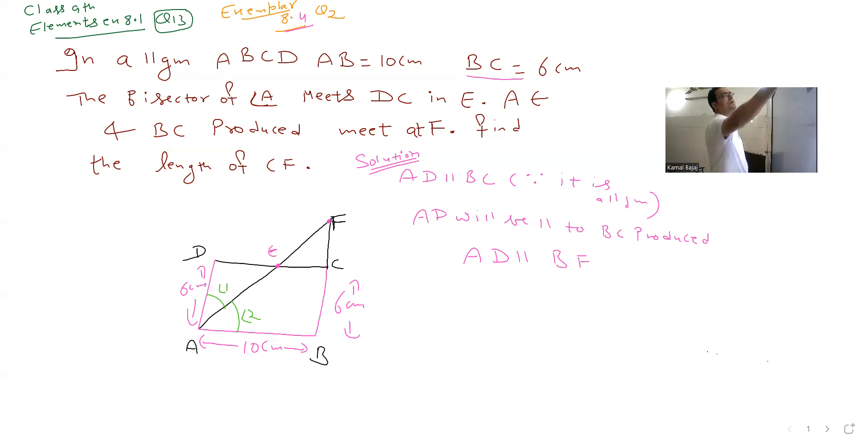In this figure, AF is the transversal. Angle 1 and angle 3 are equal because they are alternate interior angles.